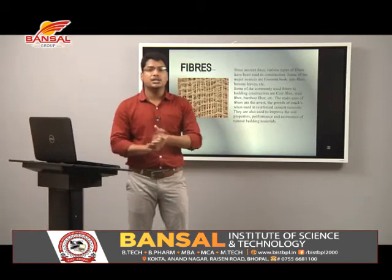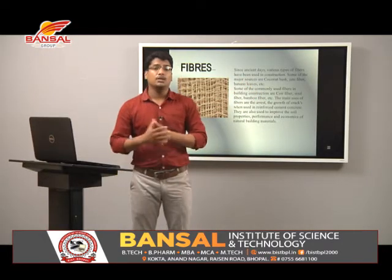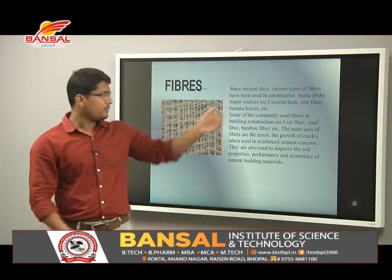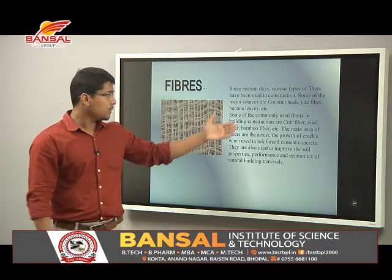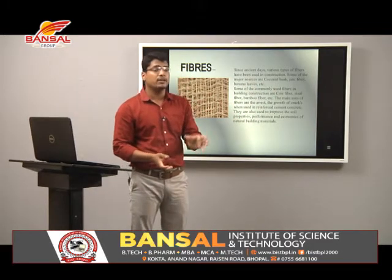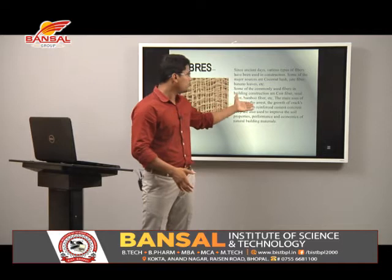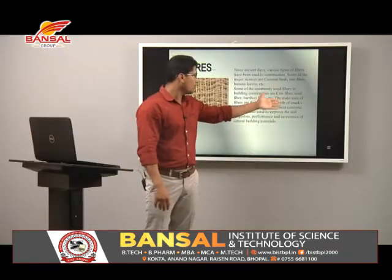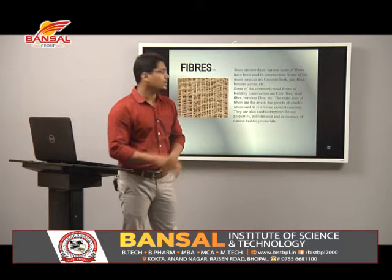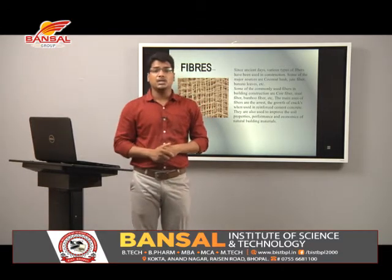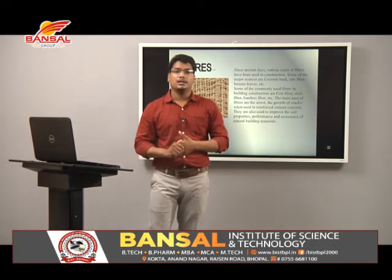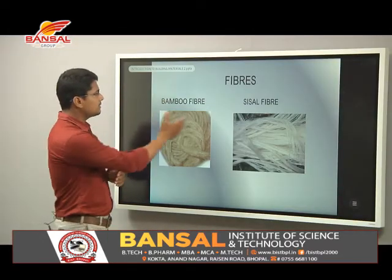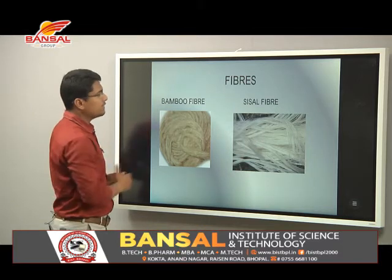Fibers: since ancient days, various types of fibers have been used in construction. Some of the major sources are coconut husk, jute fiber, and banana leaves. Commonly used fibers in building construction include coir fiber, sisal fiber, and bamboo fiber. The main use of fibers is to arrest the growth of cracks when used in reinforced cement concrete. They also improve soil properties, performances, and selection criteria for construction engineers. Here are some pictures — this is bamboo fiber and this is sisal fiber.